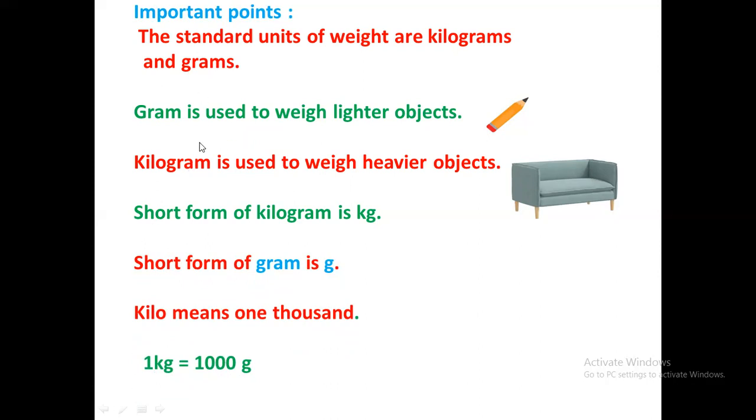So students, let's revise these points. Standard units of weight are kilograms and grams. Gram is used to weigh lighter objects. Kilogram is used to weigh heavier objects. Short form of kilogram is kg. Short form of gram is small g. Kilo means 1000, and one kilogram equals 1000 grams.